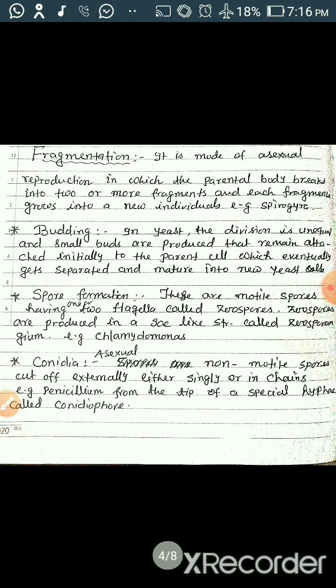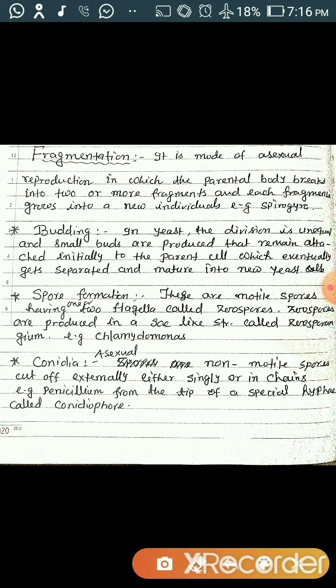Next is budding. In yeast cells, the division is unequal and small buds are produced. During the formation of the bud, there is a size difference. The bud remains attached initially to the parent cell, which eventually gets separated and matures into a new cell. In the case of hydra, there is also budding, but these buds are totally detached after maturity from the parent cell.